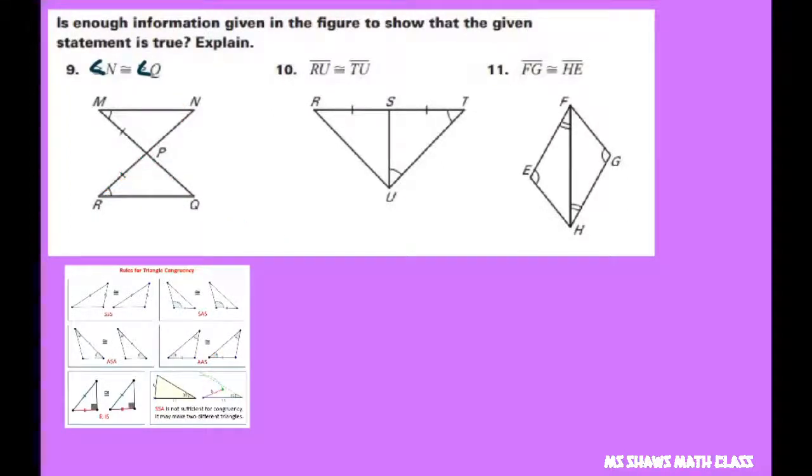Okay, the next one we have RU is congruent to TU. And what that gives us is we know on this side for our triangle we have side angle side. But on this side we don't have enough information. So this is not enough information because we need an angle here to show congruency.